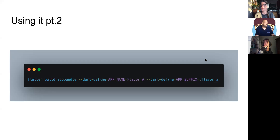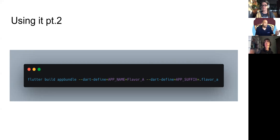Here's another cool part: if you want to create an app bundle, you could write the same thing with the flavor suffix and any other variable, and it would create the app bundle with all the variables you need for your app for the Play Store.